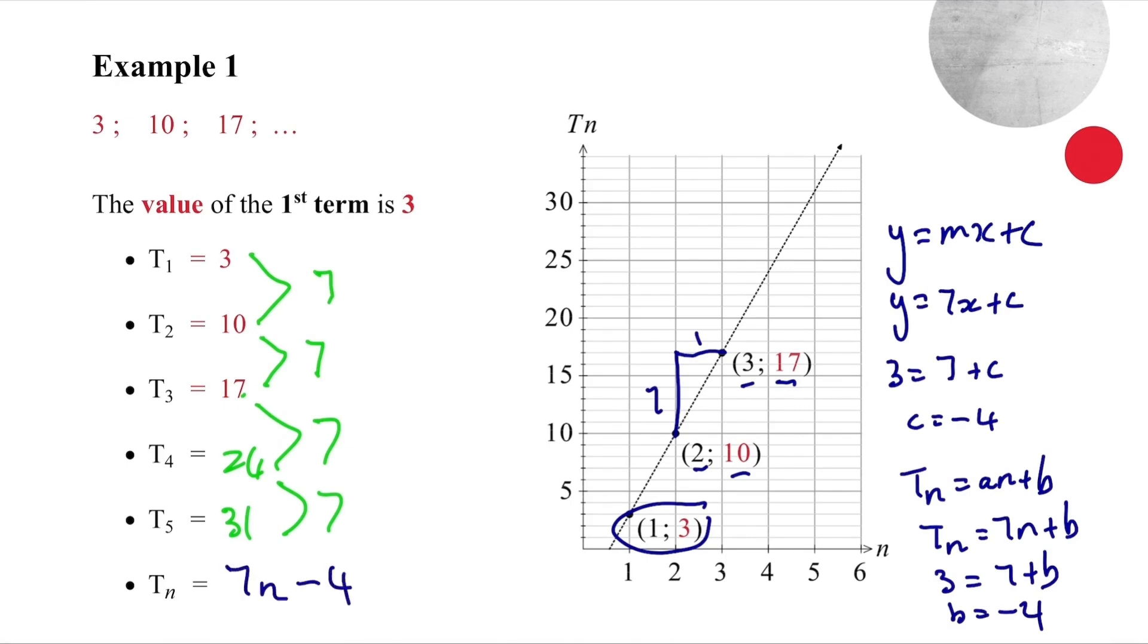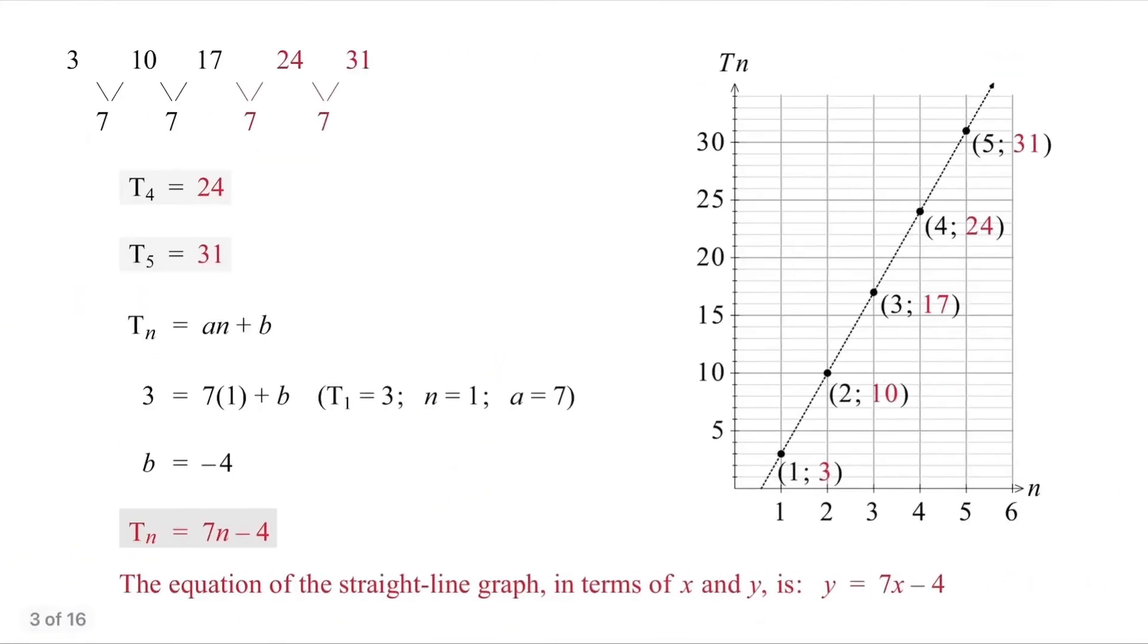We can easily find the minus four by inspection by simply saying when the answer needs to be three, we need to substitute n equal to one. And if we put one into here, we get seven, but we need three. So we subtract four. If you need to have another look at what I've just been through with you, pause the video, do this in your own time. And when you're ready, we'll do the next example together.